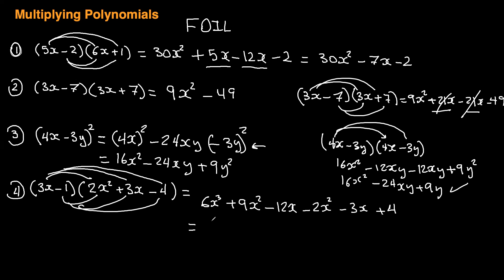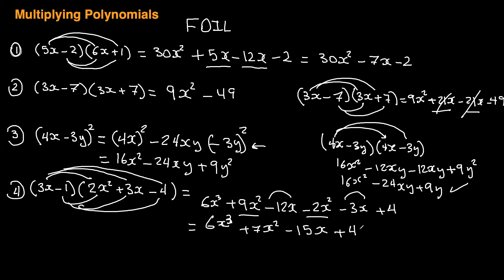Collecting like terms: we get 6x cubed. 9x squared minus 2x squared is 7x squared. Negative 12x and negative 3x are like terms: negative 12 minus 3 is negative 15x. And the 4 has no like terms, so just plus 4 at the end. That's exactly how you foil a binomial into a trinomial.